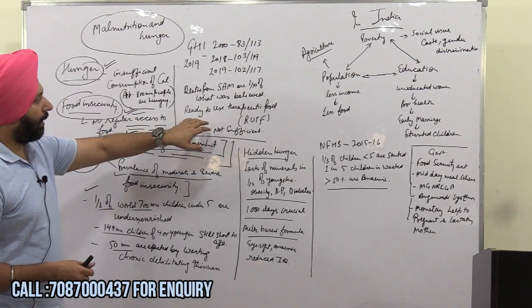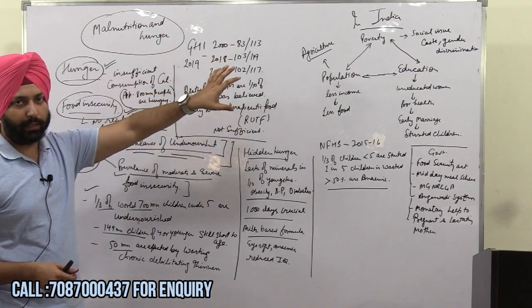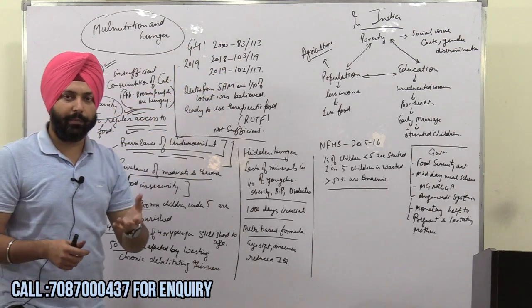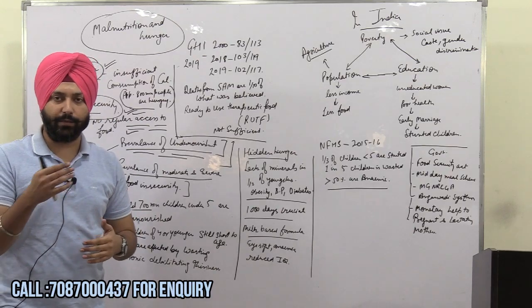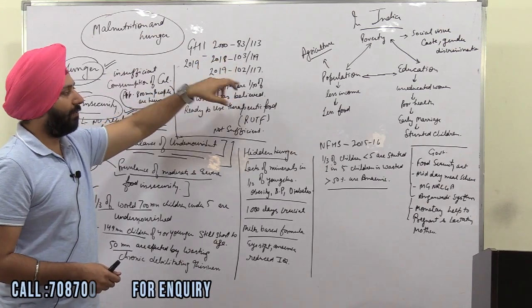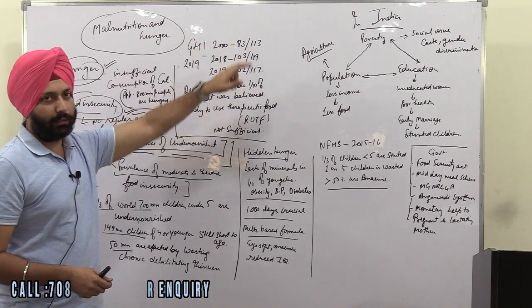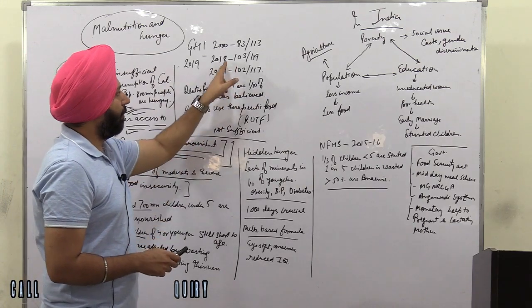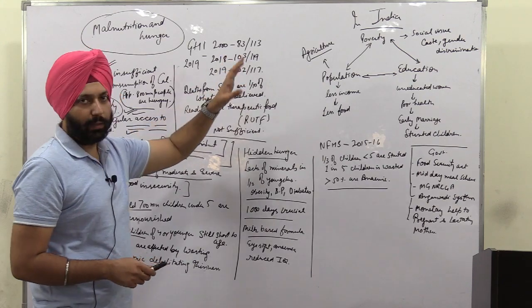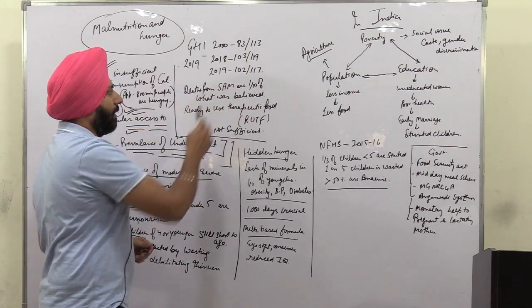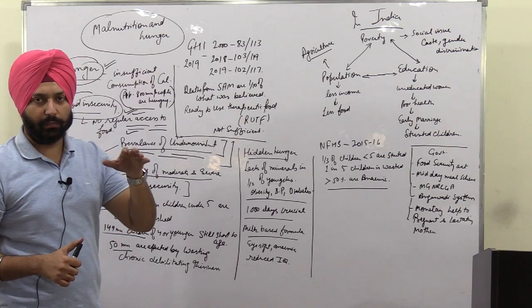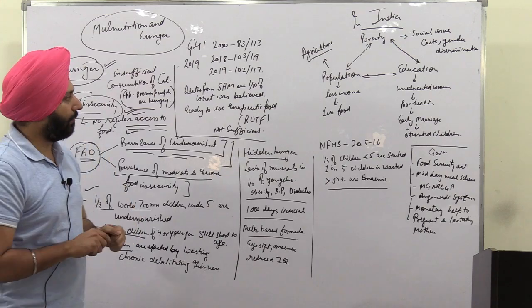The Global Hunger Index is based on three indicators, which will be mentioned in the PDF linked with this video. If we look at India's performance, in 2000 it was far better with a rank of 83 among 113 nations. In 2018 it slipped to 103rd rank among 119 nations, and this year India's rank is 102nd among 170 nations — showing a significant downfall in India's ranking.